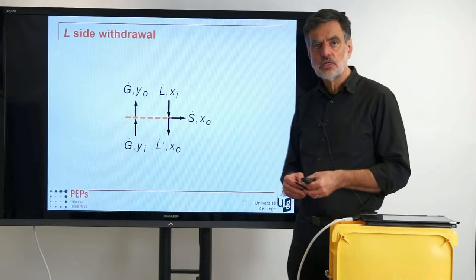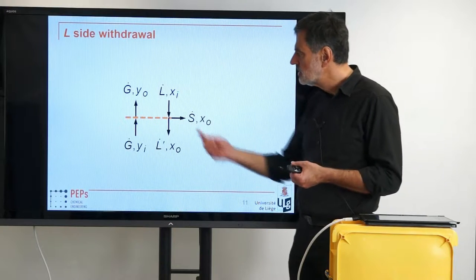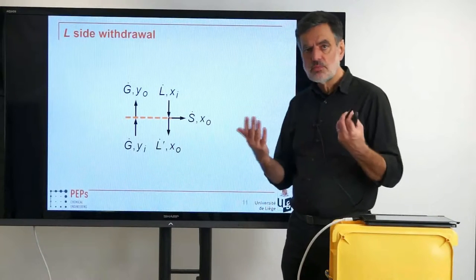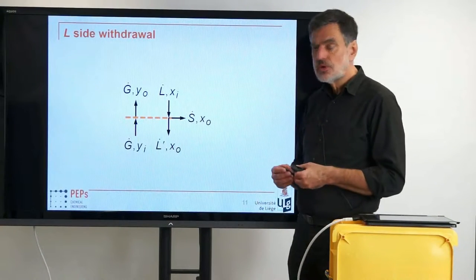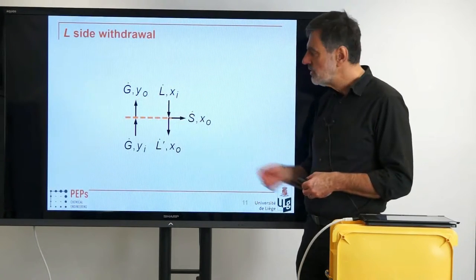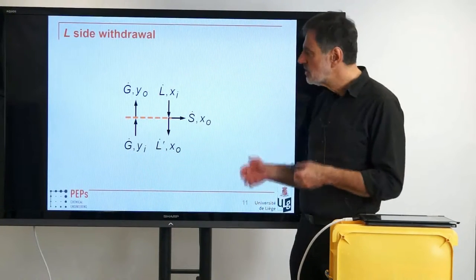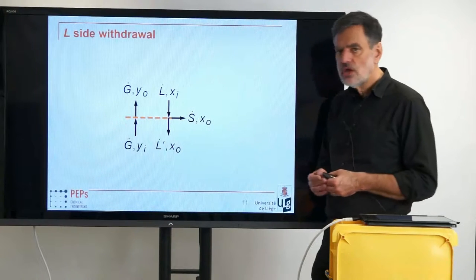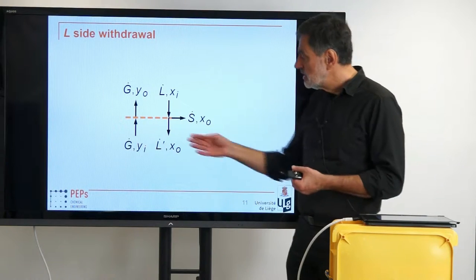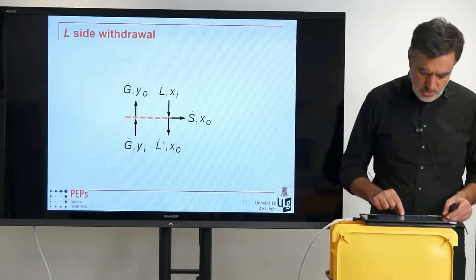What does that mean for the operating line? Whatever happens to the operating line, it has to occur at the point (XI, YO), which is the same as (XO, YI). So at that point, something happens. Apparently, the L-dot over G-dot defining the slope of the operating line above changes, because below we have the slope L-dot prime over G-dot, which differs from the slope above because we have removed the side stream. In order to determine L-dot prime related to L-dot, we have to set up the balances.